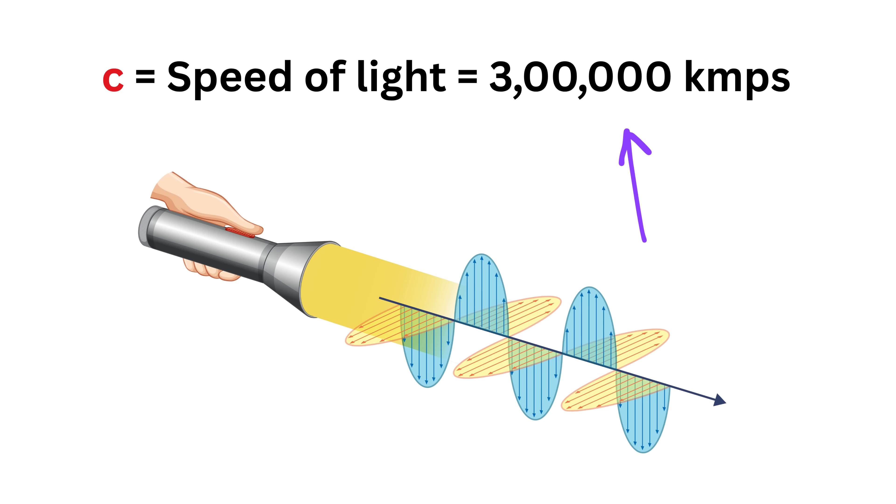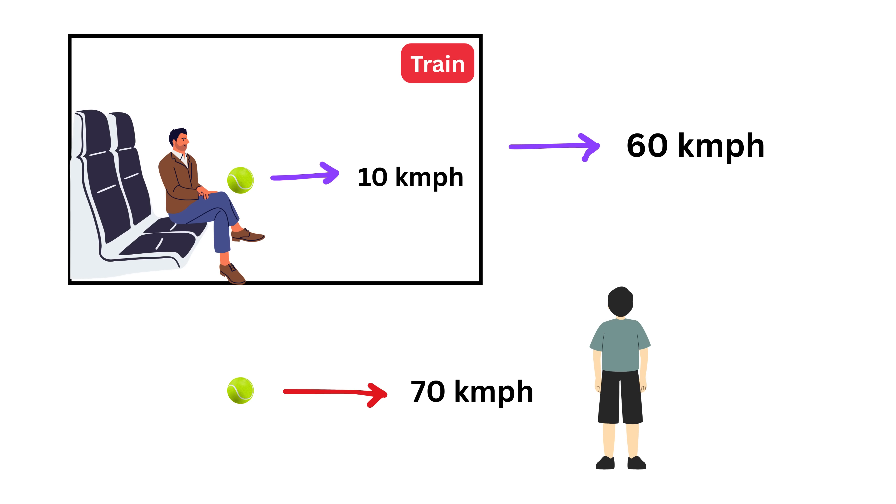Light always moves at the same speed, no matter what. Right now we have seen the example of the ball inside the train, where the relative speed of the ball is different for the person inside the train and the person standing outside. But when the same logic is applied to light, it completely fails. No matter how fast the observer is moving, the speed of light remains the same for everyone.